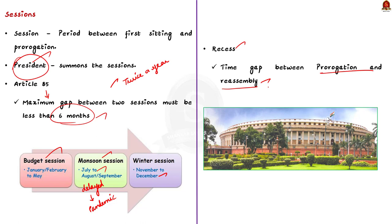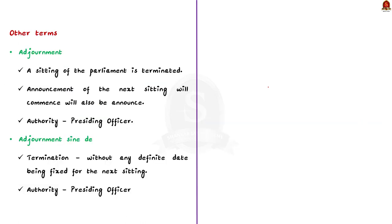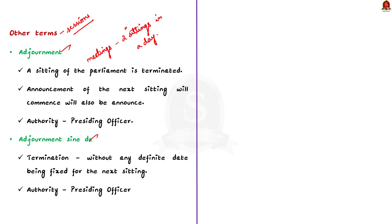A session of parliament has many meetings and each meeting in a day consists of two sittings. A sitting of parliament can be terminated by adjournment. Adjournment is defined as the termination of the sitting of the house. After the termination of the sitting, the house meets again at the time appointed for the next sitting.